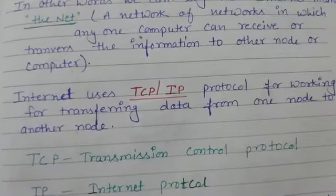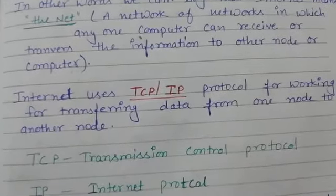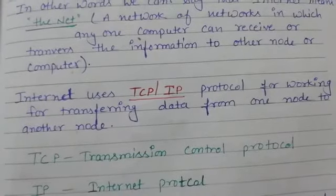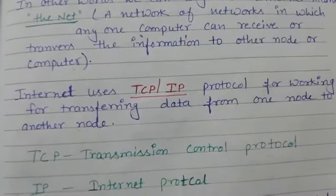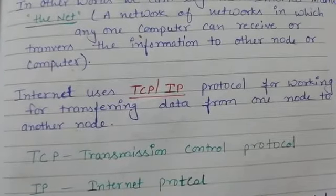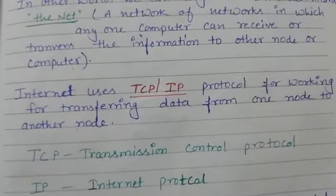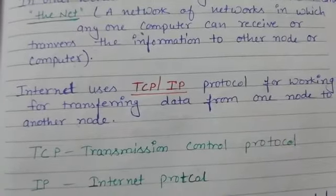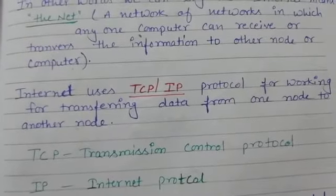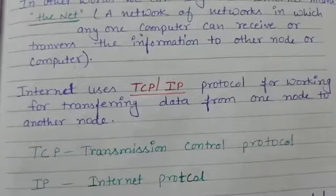We use internet connectivity to communicate between multiple nodes — like one PC I have and one PC you have. If you want to give me some information over the internet, you can send it to me. I can give you videos or messages, like WhatsApp — this is internet communication. TCP protocol is responsible for taking information from one node to another node and transferring it.